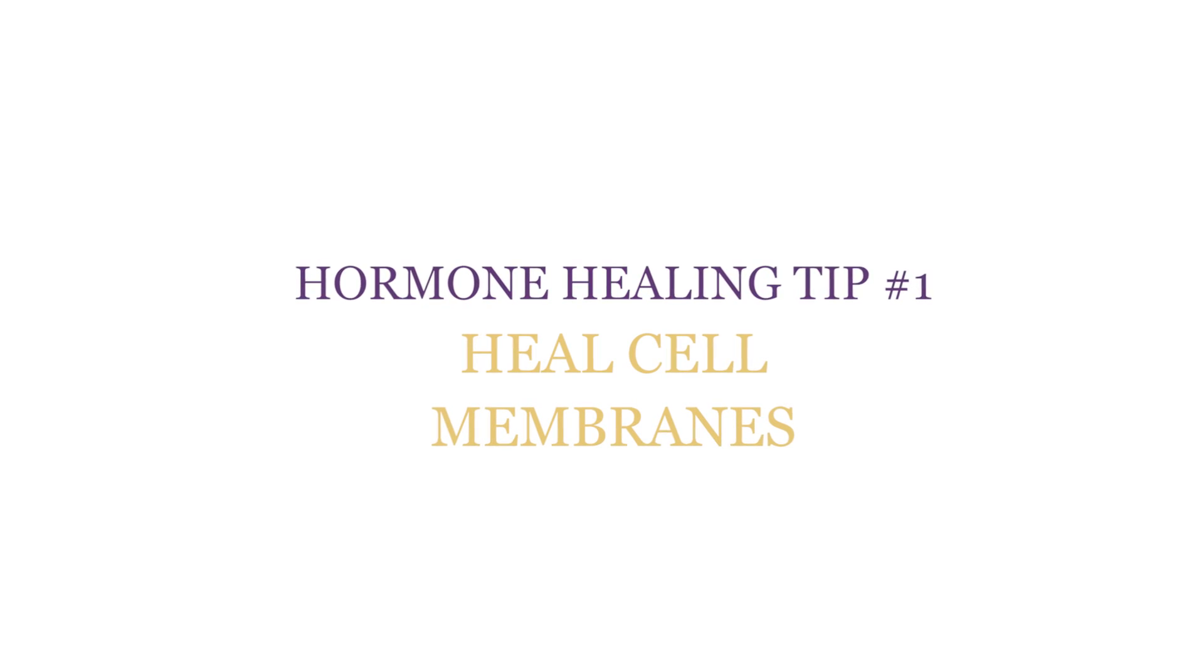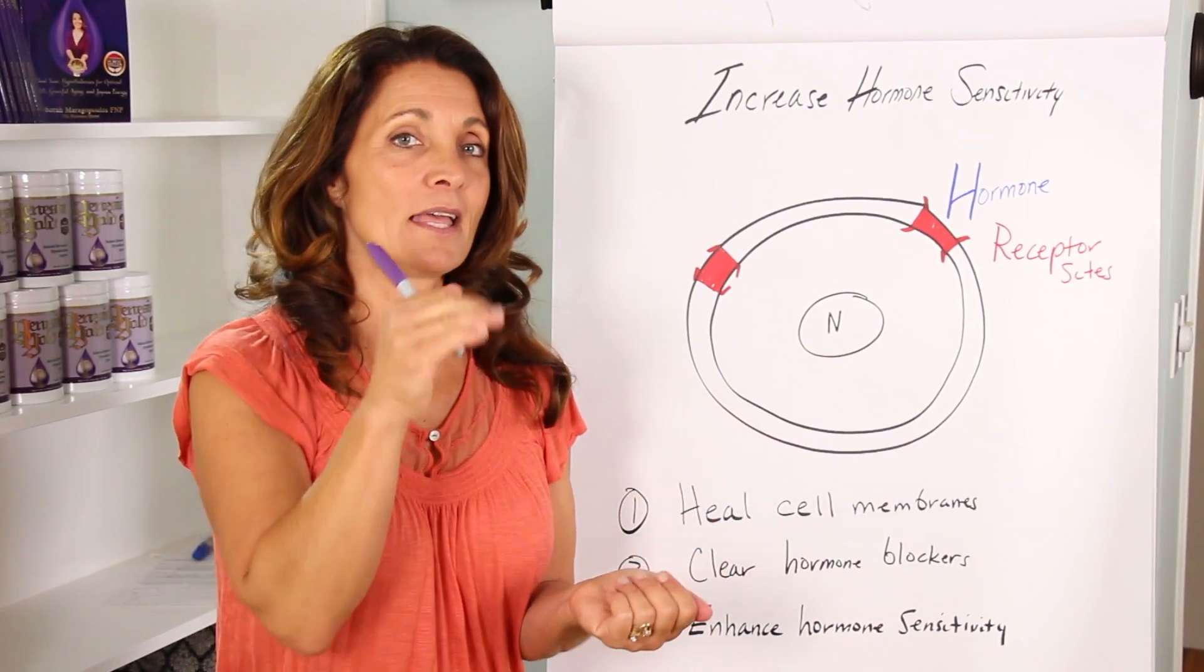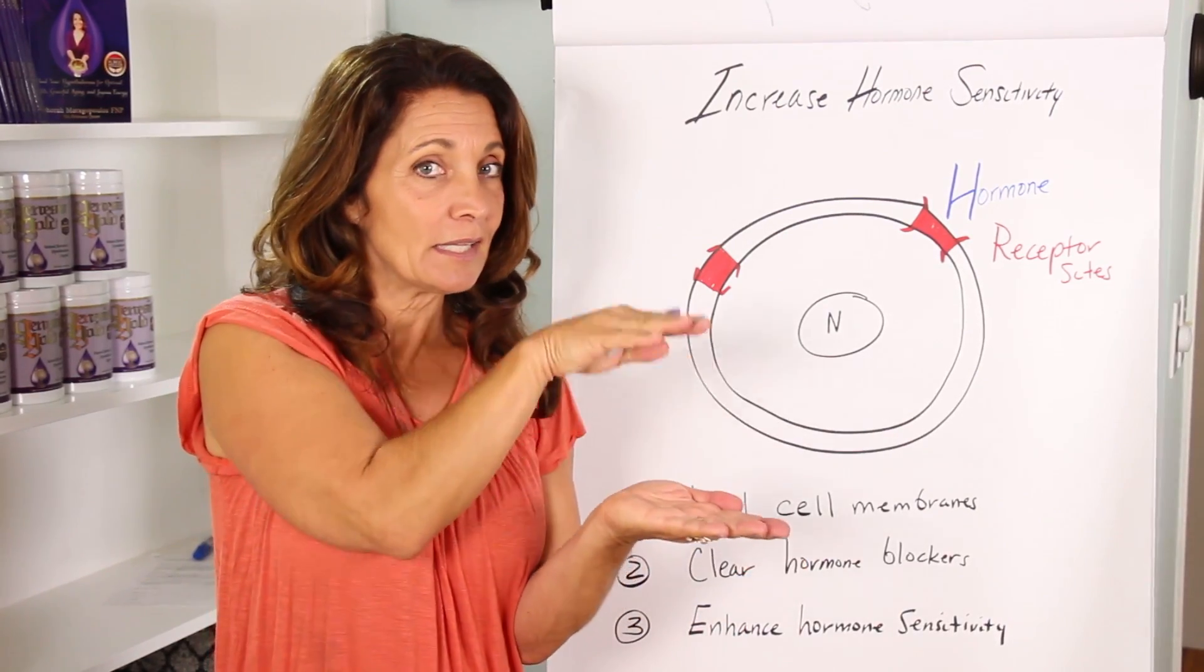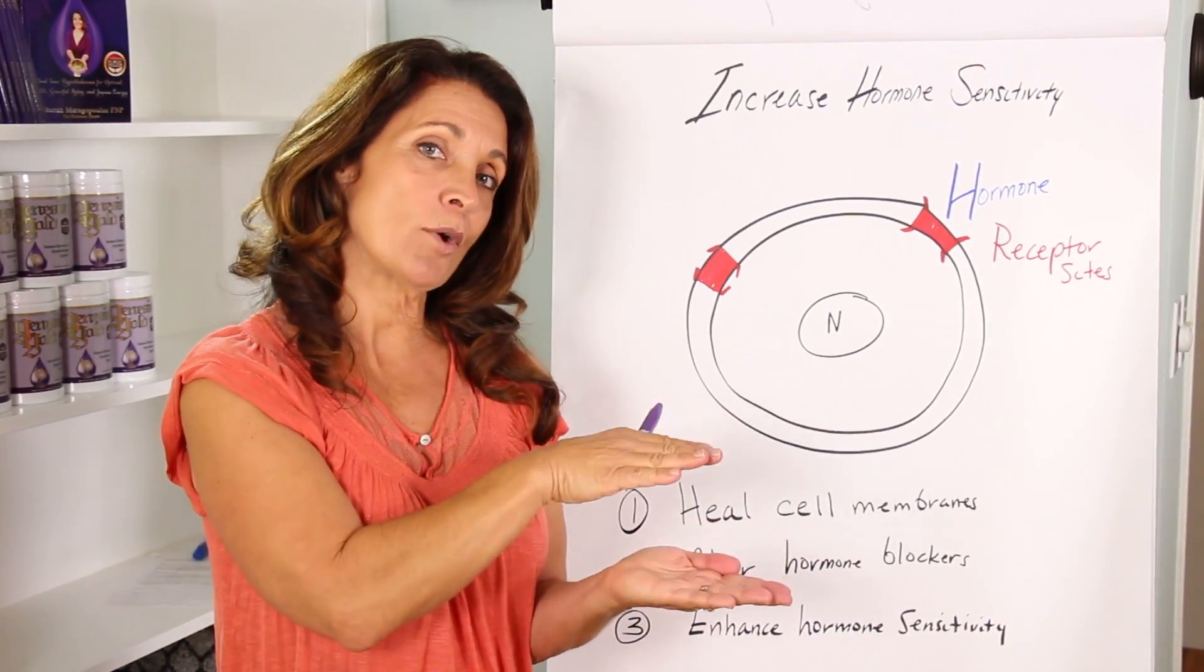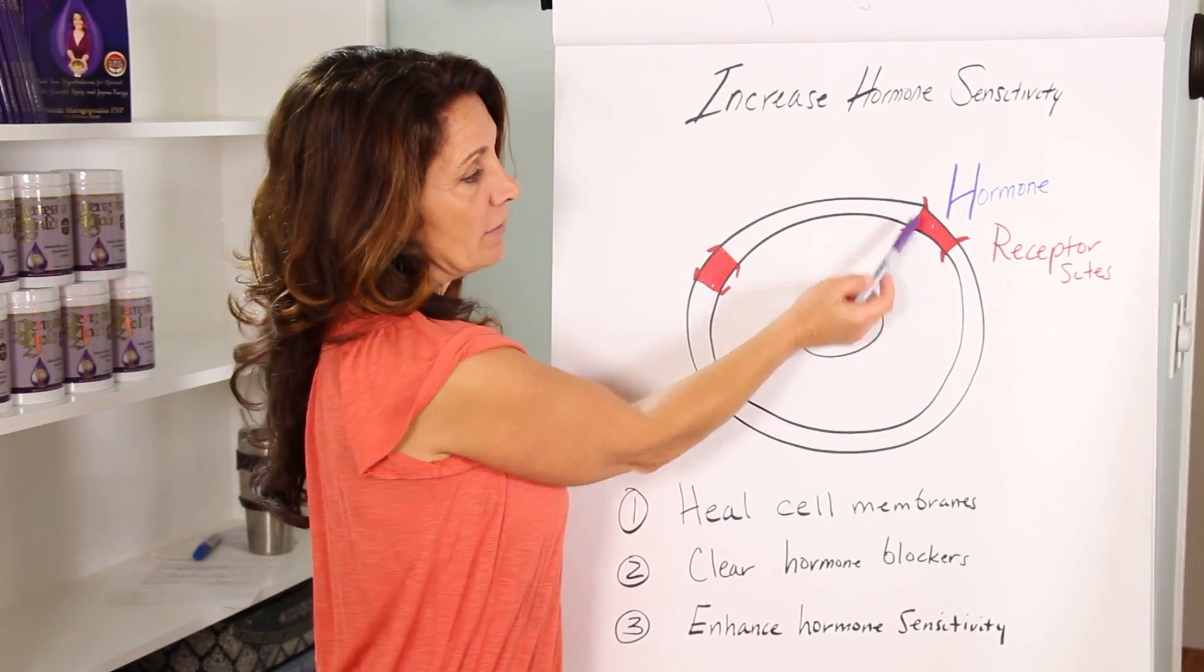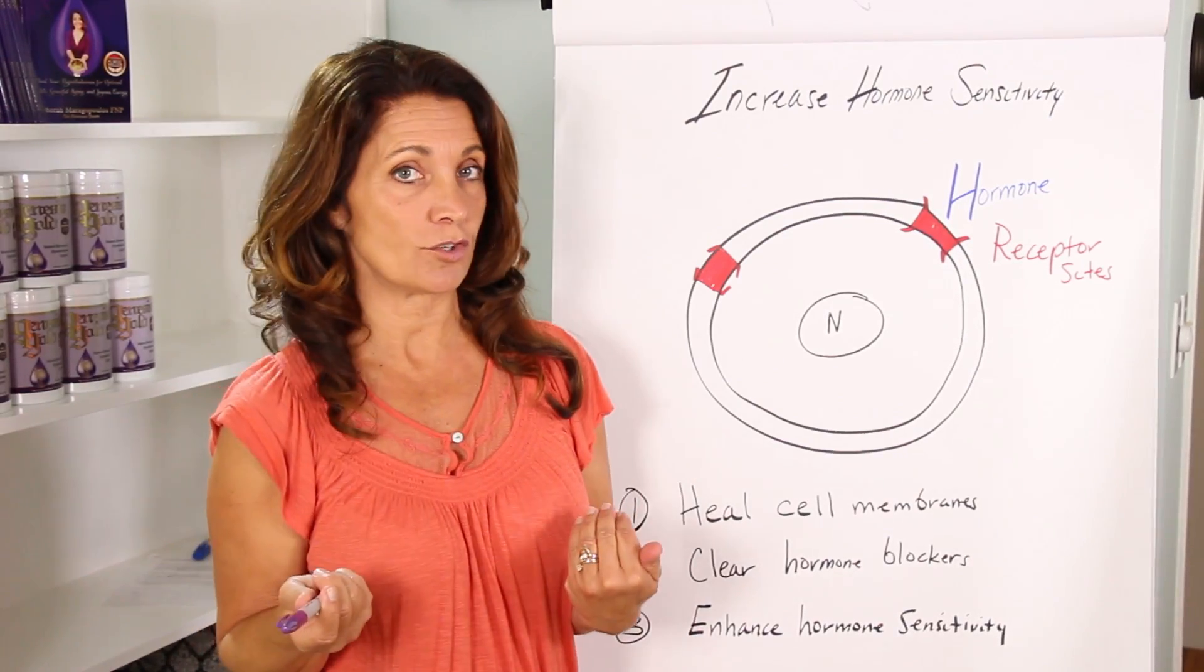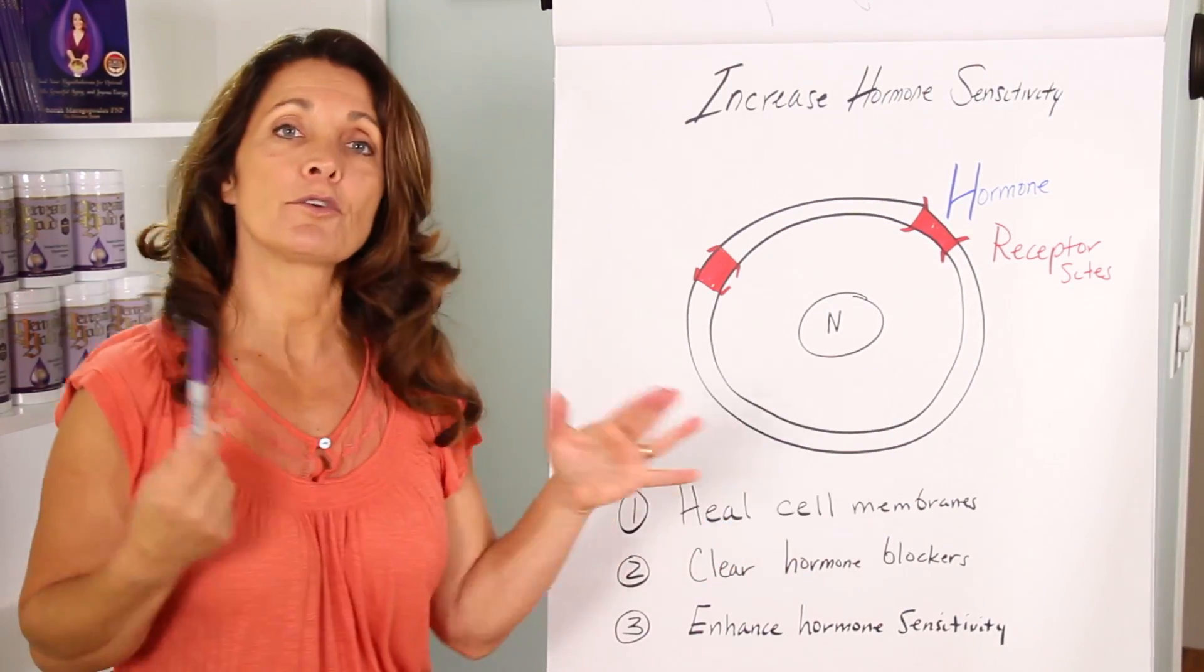In order for the hormones to work, they have to get into the cells. If you have receptor sites that are more active and more sensitive, then your hormones are going to work better. Number one, heal cell membranes. Your cell membranes are kind of like a butter sandwich. Glycoprotein, lipids in the middle, and more glycoprotein. The cell receptor sites are within the cell membranes. So if your cell membranes are unhealthy, your cell receptor sites do not function normally.